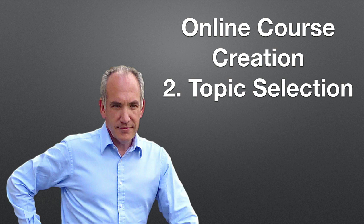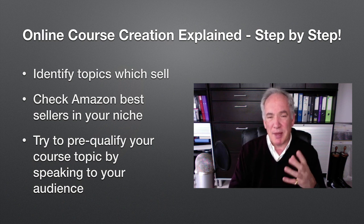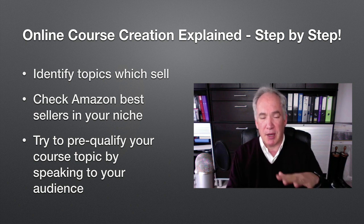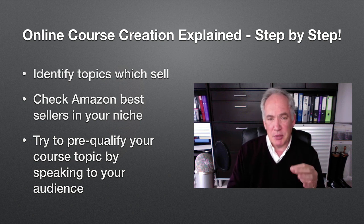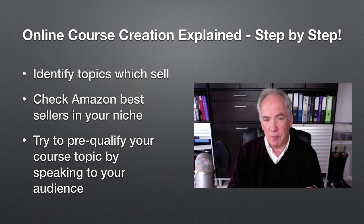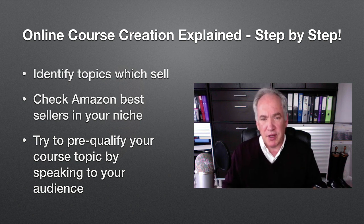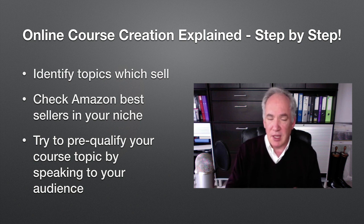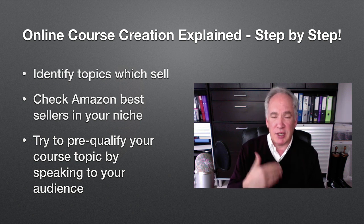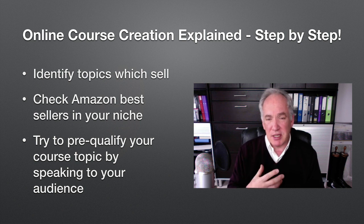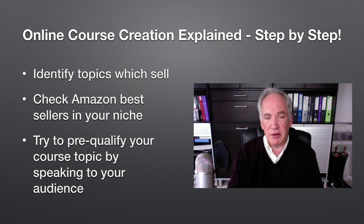Online course creation step two is topic selection. Understanding what you're good at doesn't automatically mean you rush out and make a course about whatever you feel. You need to identify topics that sell but also topics that solve pain and problem points. Don't create a general course about X, Y or Z — create a course about how to fix something if X, Y and Z goes wrong. One of the best ways to research this is to look at Amazon's bestseller list in your niche and check the table of contents for topic ideas.